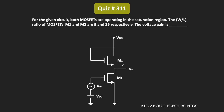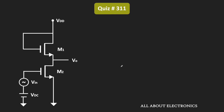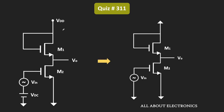To find the voltage gain, let us replace this circuit by the AC equivalent circuit. For the AC analysis, these DC voltage sources will act as zero. And if you see the equivalent circuit, it will look like this.